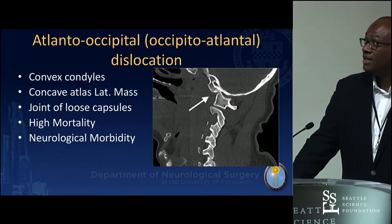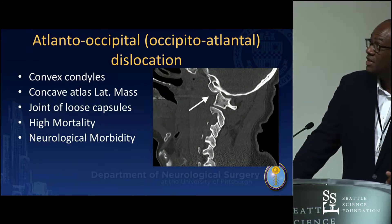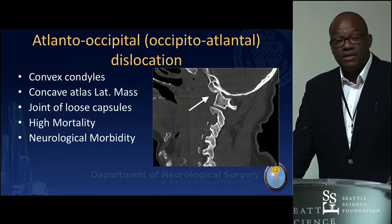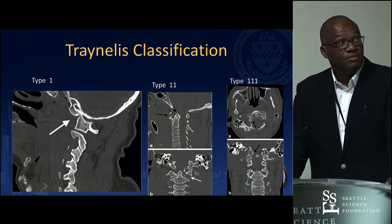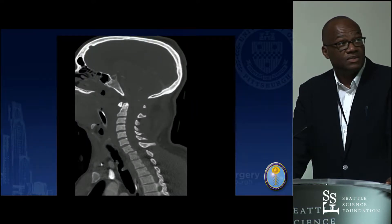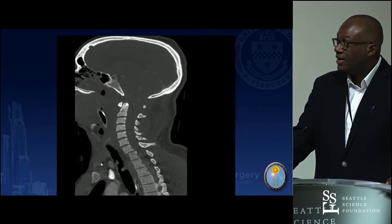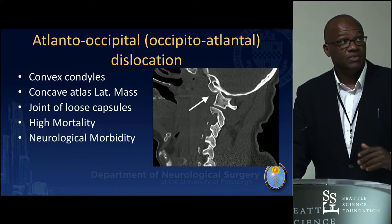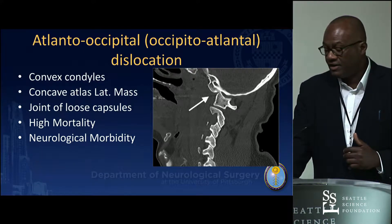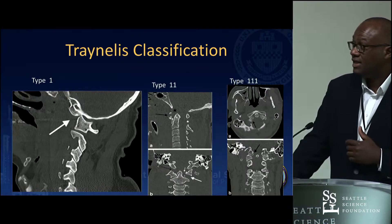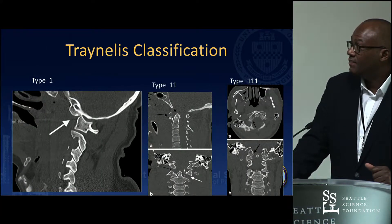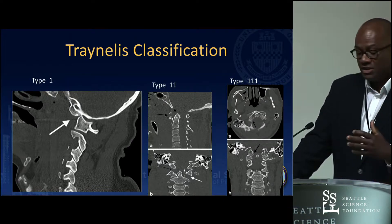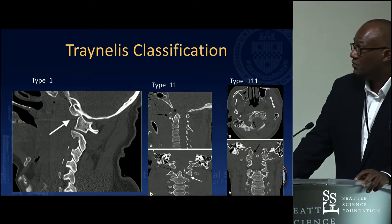Moving to atlantooccipital dislocation: based on the Traynelis classification, it describes the displacement of the occipital condyles in relation to the C1 atlas. Type 1 refers to anterior displacement of the occipital condyles, which are often unstable. Type 2 is distraction, and Type 3 involves rotation.